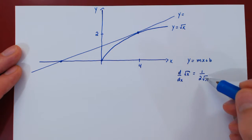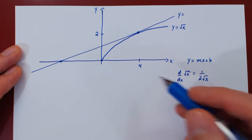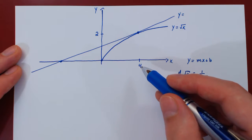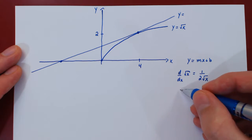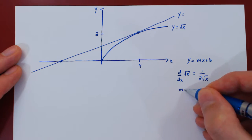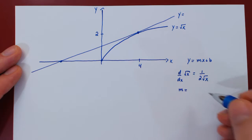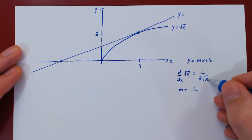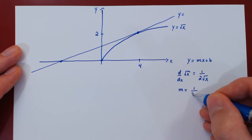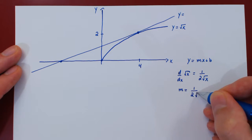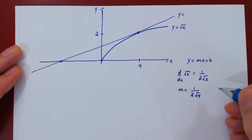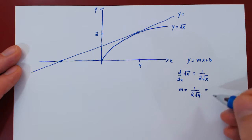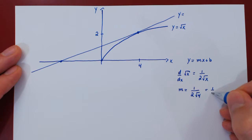So m will be the derivative specifically when x is 4: m equals 1 over 2 times the root of 4. Root of 4 is 2, 2 times 2 is 4, so m is 1 quarter.